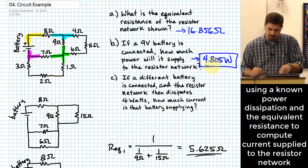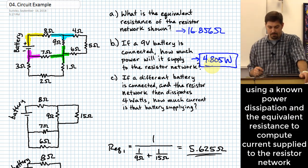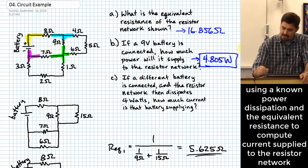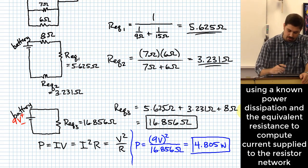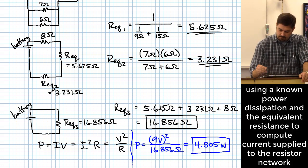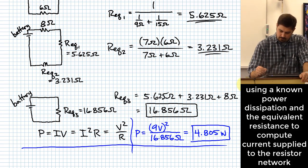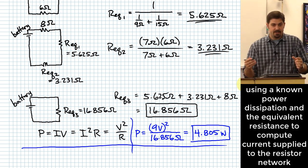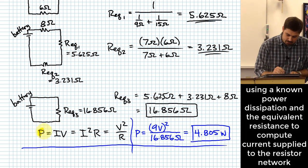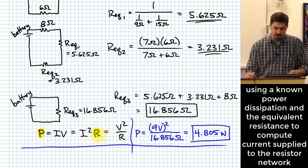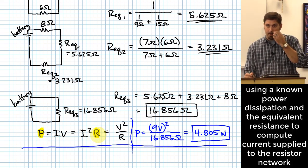All right, what was part C? If a different battery is connected and the resistor network then dissipates 4 watts, how much current is that new battery that you connected supplying? So now we're no longer with a nine volt here. Now what? What do you think our best equation might be now? Yeah, so what we, you kind of think of what do you know and what do you need, right? You actually know for this last part of the problem, you know power and you know resistance. And if you know power and resistance, then that allows you to find I.